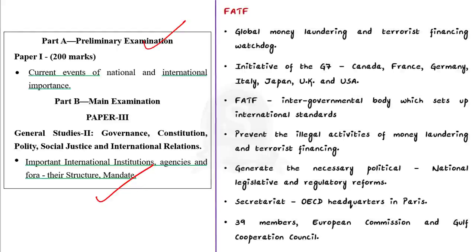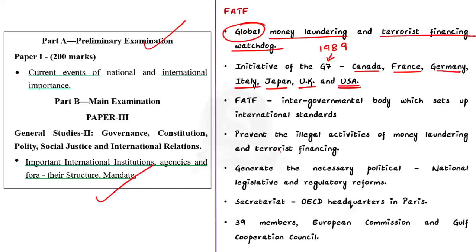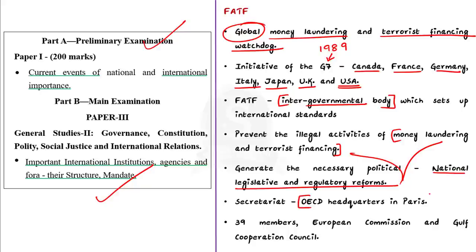The Financial Action Task Force is the global money laundering and terrorist financing watchdog. It was founded in 1989 on the initiative of G7, which consists of Canada, France, Germany, Italy, Japan, the United Kingdom and the United States. FATF is an intergovernmental body that sets international standards to prevent illegal activities of money laundering and terrorist financing, and also prevents the harm these cause to society. Its secretariat is located at the OECD headquarters in Paris. Currently FATF has 39 members, including two regional organizations — the European Commission and Gulf Cooperation Council. India is also a member.